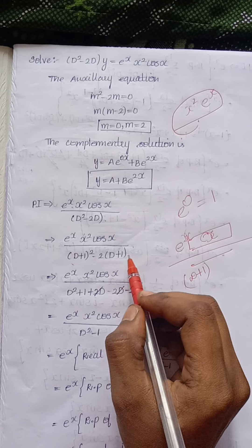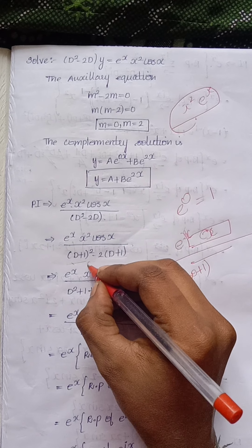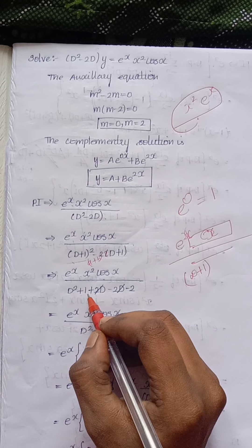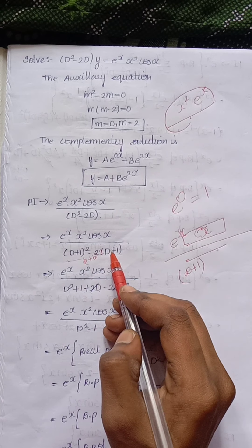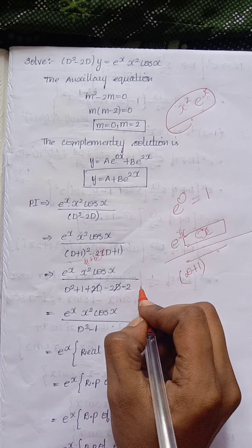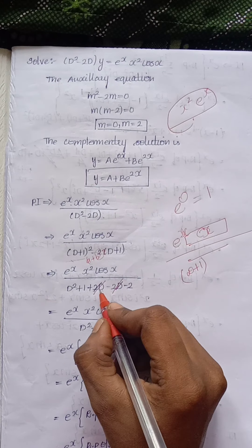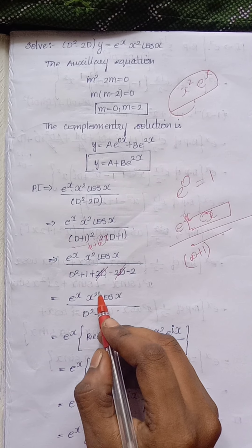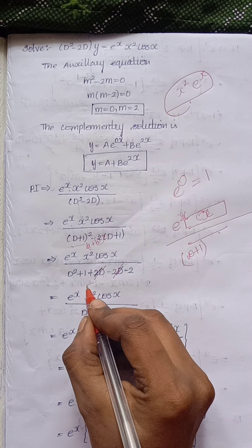Expanding (D+1)² minus 2(D+1): that is D² + 2D + 1 minus 2D minus 2. The 2D terms cancel, and our expression becomes e^x times x² times cos x divided by (D² minus 1).